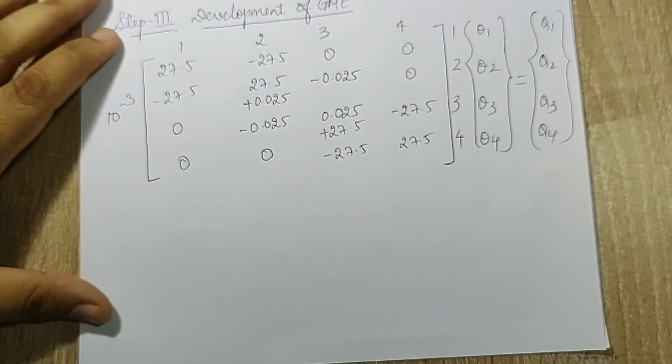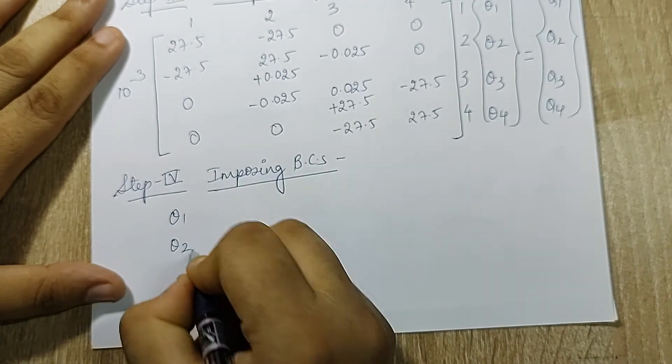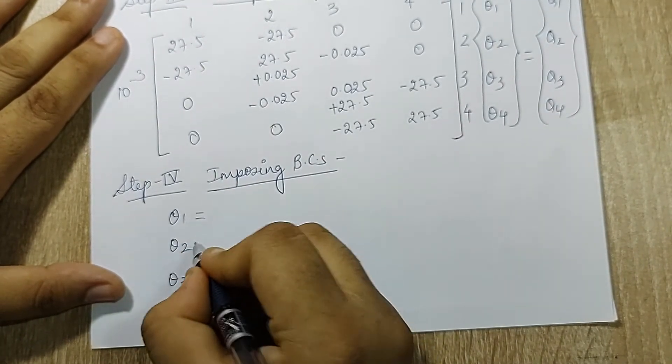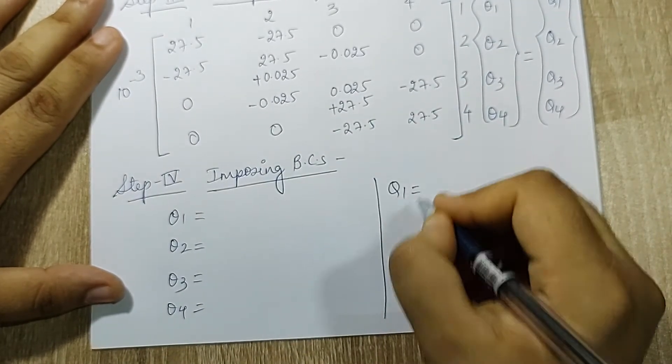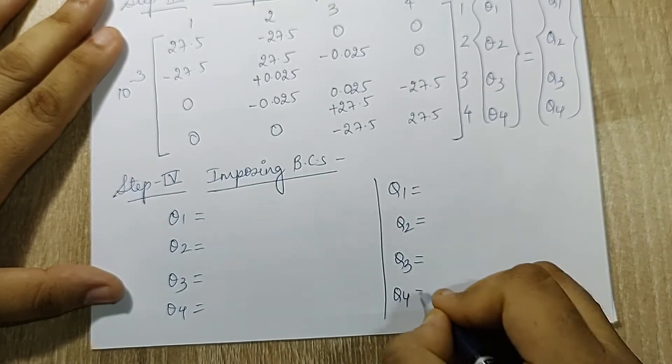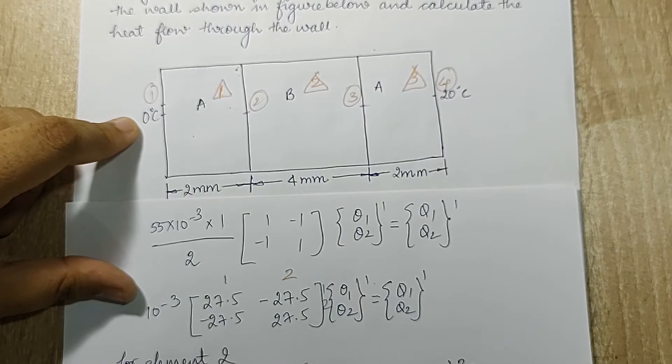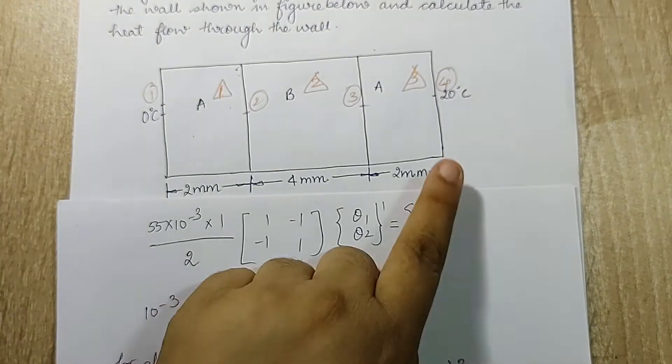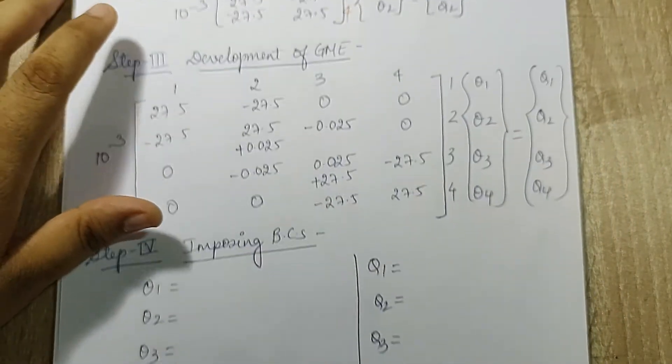Next I'll go for step 4, imposing boundary conditions. The variables are theta_1, theta_2, theta_3, theta_4, and I have q_1, q_2, q_3, q_4. Now when I go back to the question, my theta_1 is 0 degrees Celsius and theta_4 is 20 degrees Celsius.